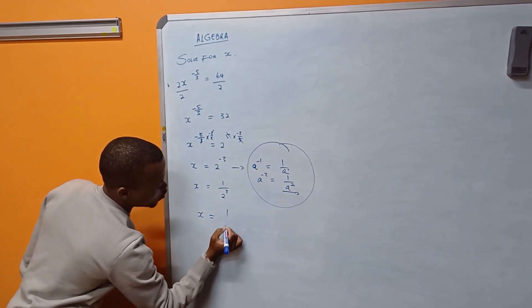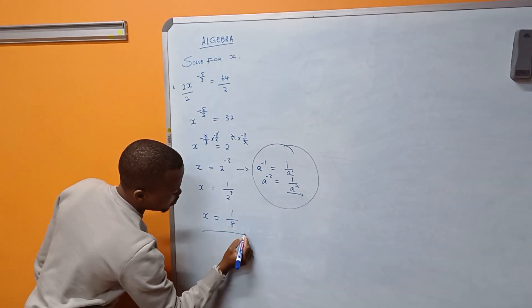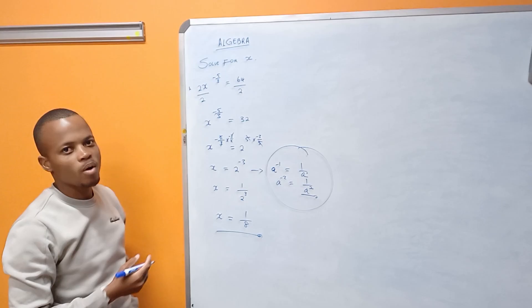x is equal to 1 over—2 to the power of 3 is equal to 8. So the value of x is 1 over 8.